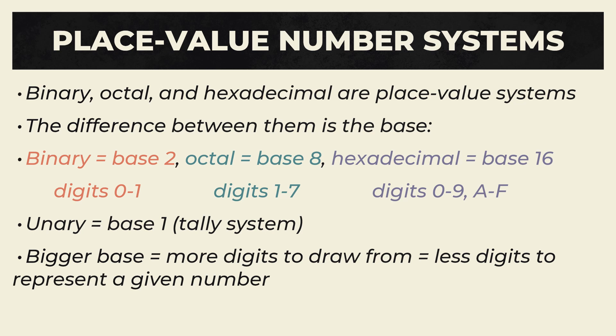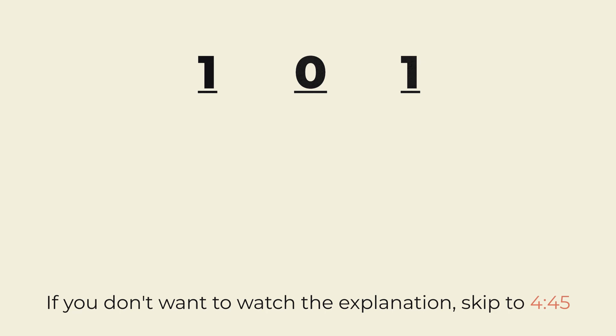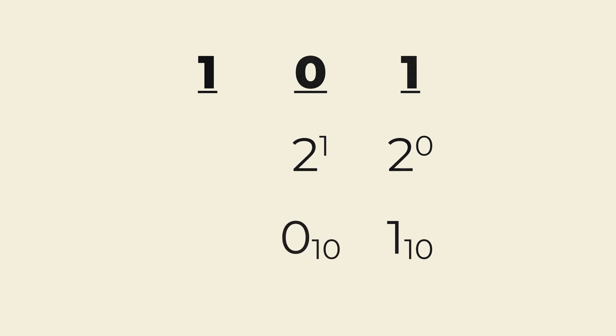In contrast, in binary you only have to remember two digits, 0 and 1. In order to clarify and strengthen your intuitions about binary, octal, and hexadecimal, we're going to look at some examples for each. We'll start with binary. In the number 101 in binary, the first 1 is in the 1 spot, because the first power of 2, 2 to the 0, is 1. 1 times 1 is 1, and 1 gets added to the total. Next, the 0 is in the 2's place, because the second power of 2, 2 to the 1, is 2. 0 times 2 is 0, so nothing gets added to the total. Finally, the second 1 is in the 4 spot, because the third power of 2, 2 squared, is 4. 1 times 4 is 4, and 4 gets added to the total, which would be 5 in base 10.